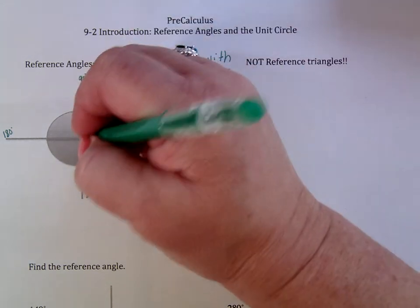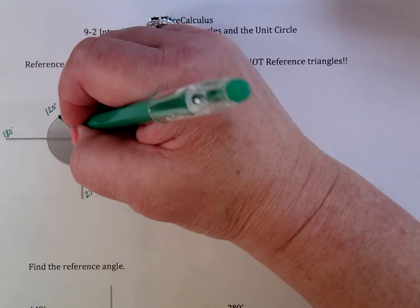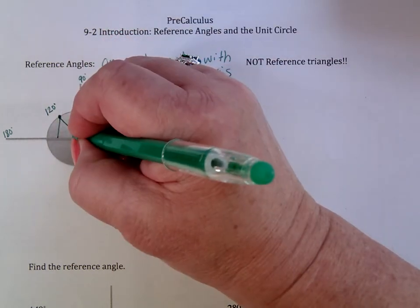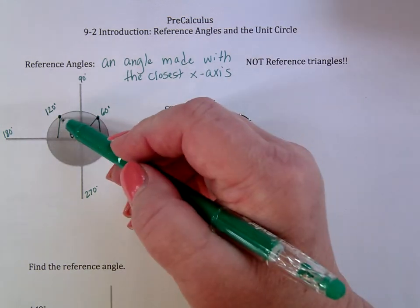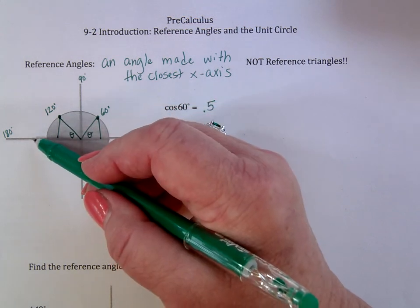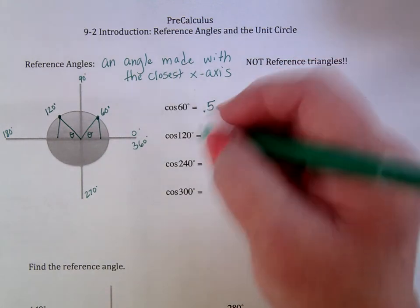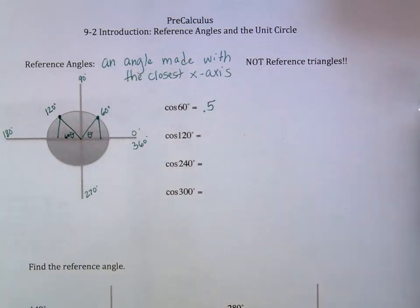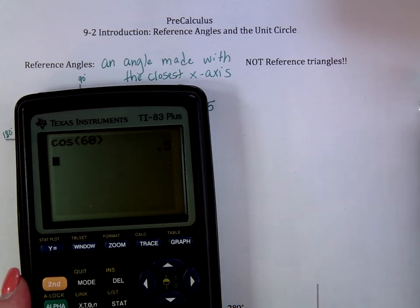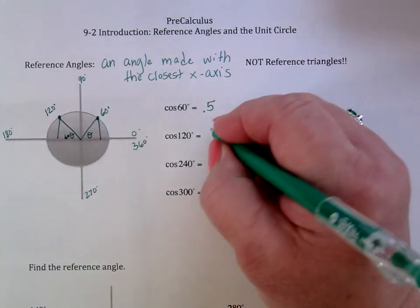If I come over to 120 degrees, that falls between 90 and 180. If I make an angle to the closest x-axis, how far is it from 120 degrees to 180 degrees? It's actually 60 degrees. That's the reference angle for 120 degrees — a 60 degree angle as well. If I ask my calculator for the cosine of 120, it's a negative 0.5. You see how they're related?